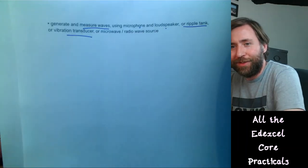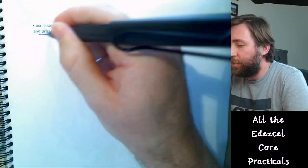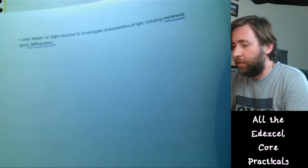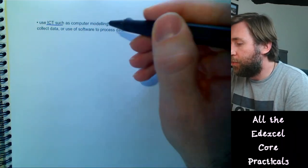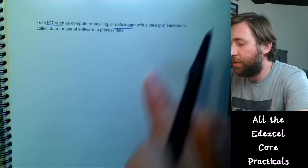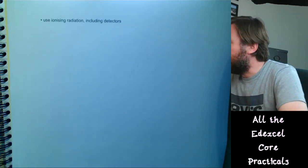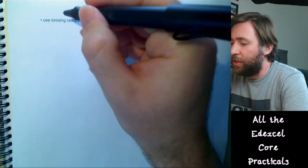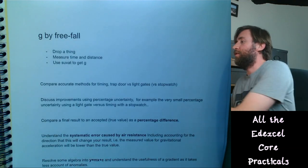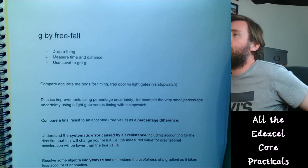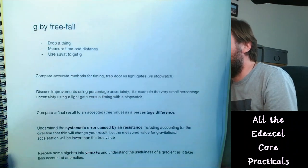You need to generate and measure waves — perhaps with a microphone for sound waves, a ripple tank, vibration generators, waves on a string, or microwave and radio wave sources. Use a laser or light source to investigate characteristics of light including interference patterns and diffraction — that's the Young's double slit or diffraction grating practical. Also use ICT such as computer modelling, data loggers, and software to process data. Finally, use ionising radiation safely, including the detectors.